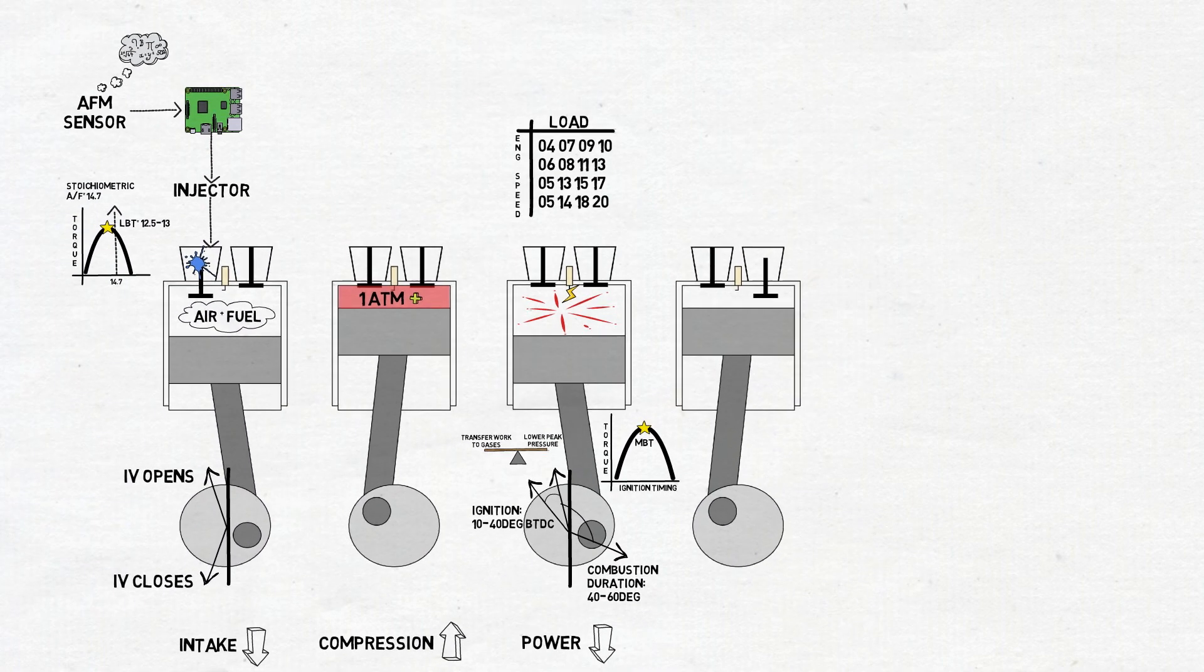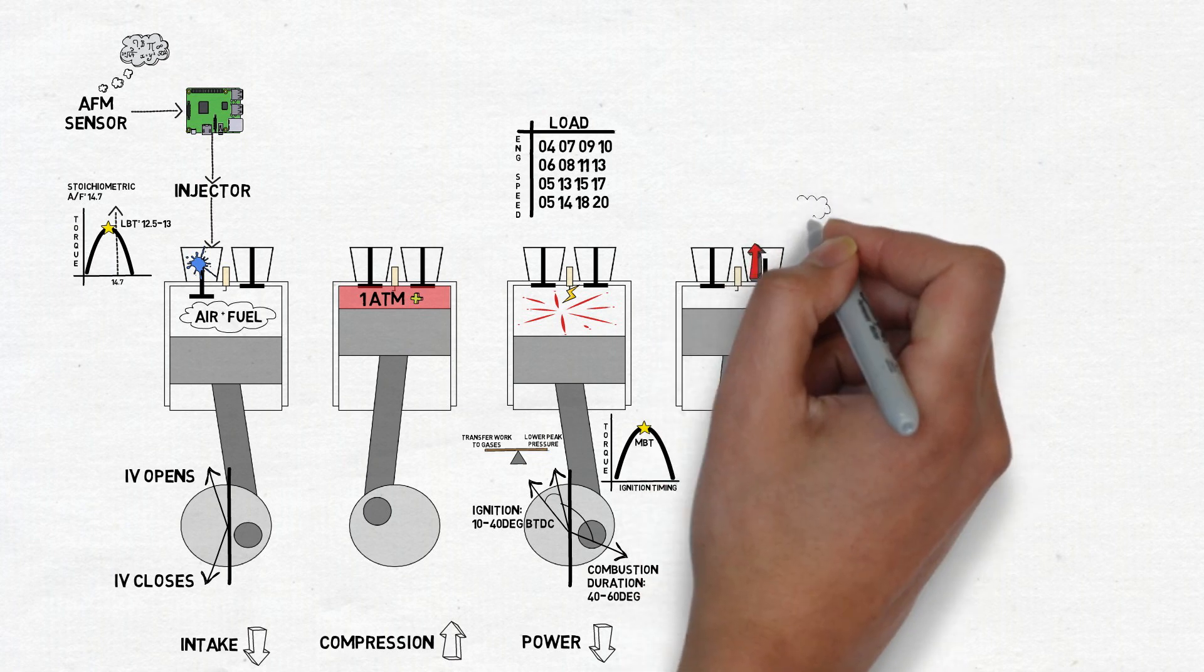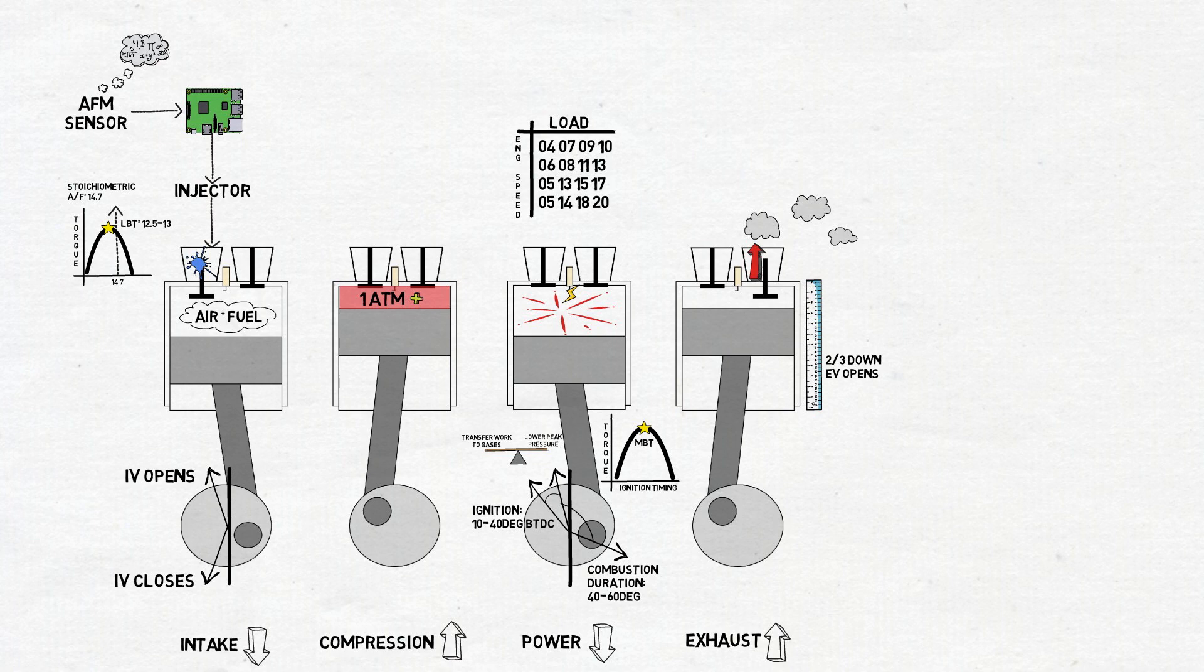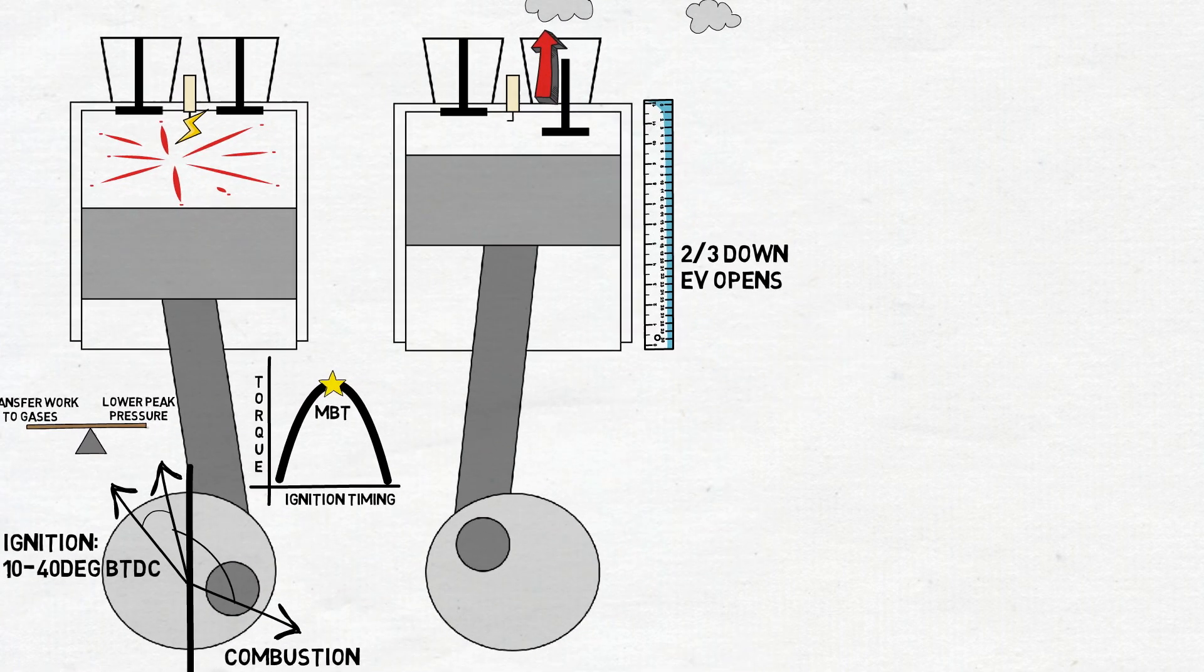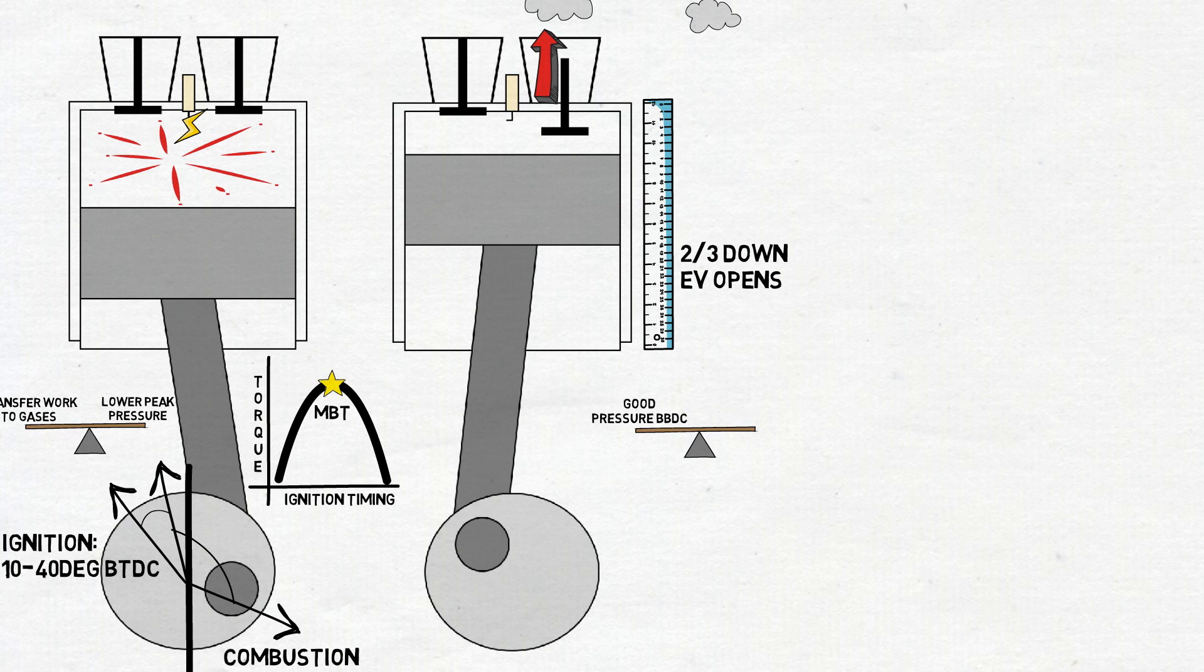When the piston is about two-thirds of the way down on the power stroke, the exhaust valve starts to open. Then during the exhaust stroke, the piston rejects the combustion products out to the exhaust manifold. The timing when the exhaust valve opens is a compromise between keeping good working pressure before bottom dead center, and reducing work transfer to the gases after bottom dead center.